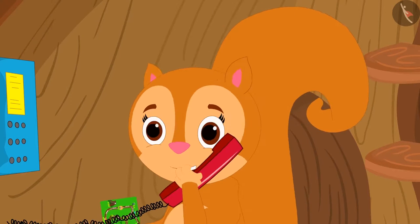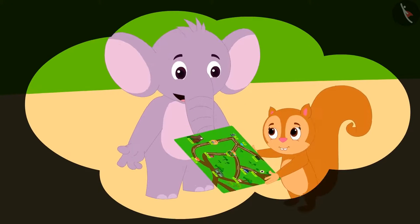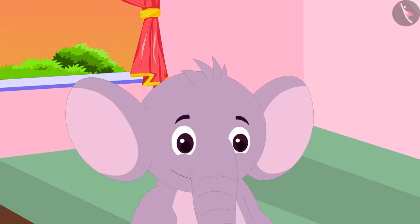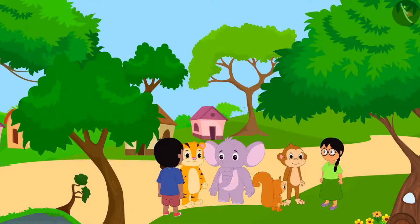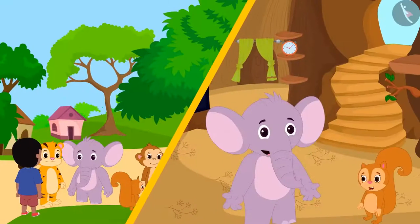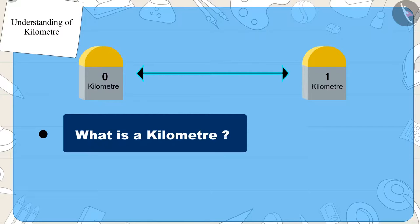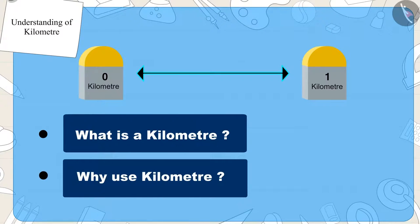Chanda said that tomorrow when they go for the trip, she will look at these road signs carefully, and asked Appu to tell her more about kilometer when they meet. Appu agreed and disconnected the call. The next video will show how the villagers' trip went and what else Appu told Chanda about kilometer. Today we learned what kilometer is and why it is used, and in the next video we will learn more about kilometer with some interesting examples.